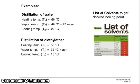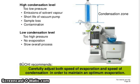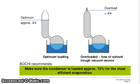Refer to the list of solvents to get the desired boiling point. High condensation load at low pressure causes emission of solvent vapor and short life of the vacuum pump, as well as sample loss and contamination. Low condensation level with too high pressure causes no evaporation and a slow overall process. Carefully adjust both the speed of evaporation and condensation to maintain optimum evaporation. Make sure the condenser is loaded approximately 75% for the most efficient evaporation.